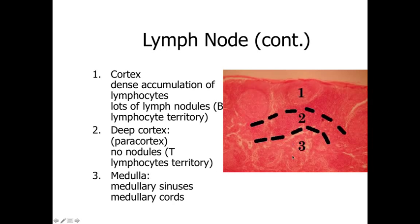Within the medulla — the lighter, inner region of the lymph node — we're going to have medullary sinuses and medullary cords. The medullary cords are where cells are located. The medullary sinuses are essentially lymphatic spaces where fluids that have been filtering through the cortex and pericortex drain, accumulate, and then leave the lymph node through an efferent lymphatic vessel.